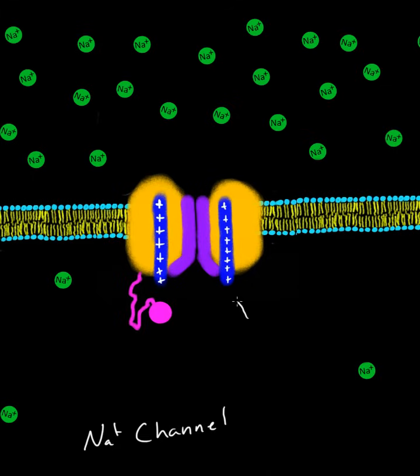Well let's focus in on the voltage part, the part that reads the voltage. And these are these blue rods and they're called the voltage sensors. And they can read the voltage across the membrane.